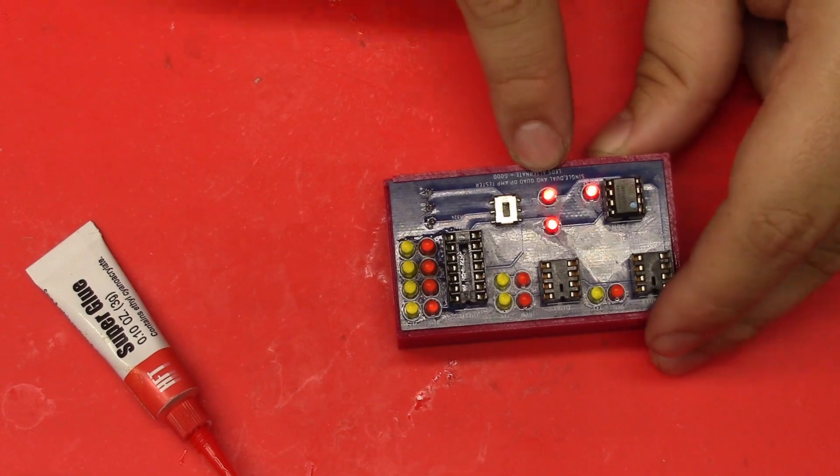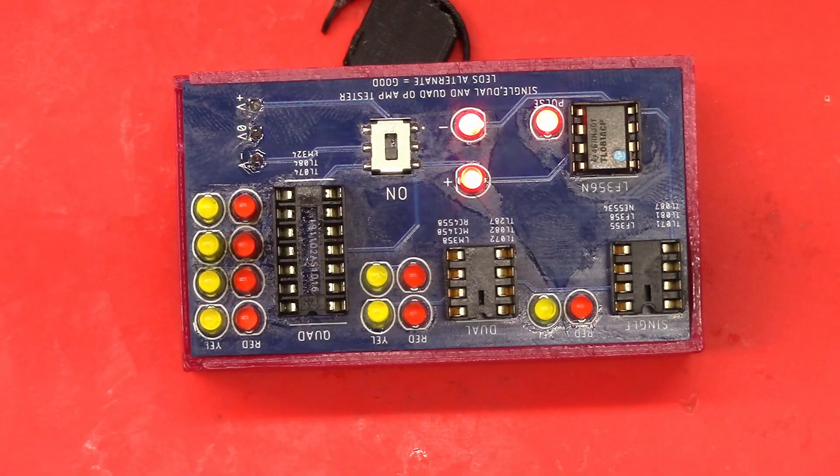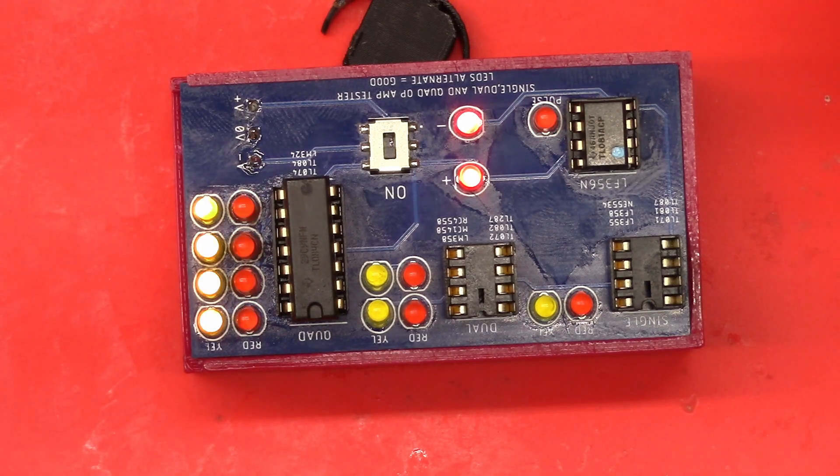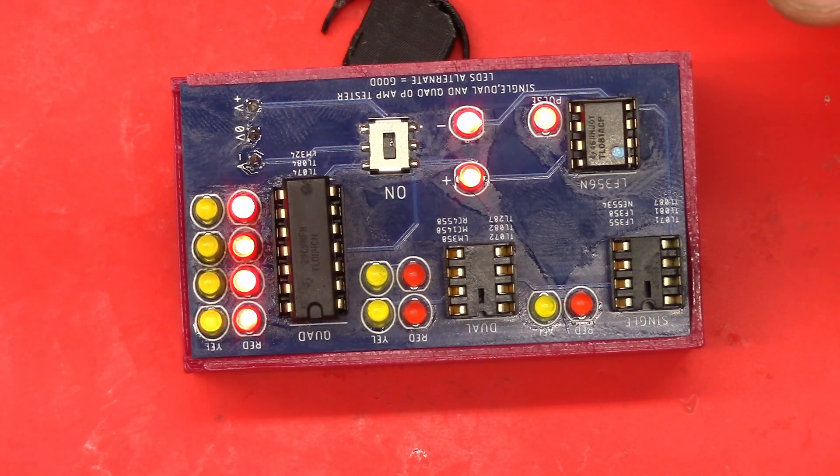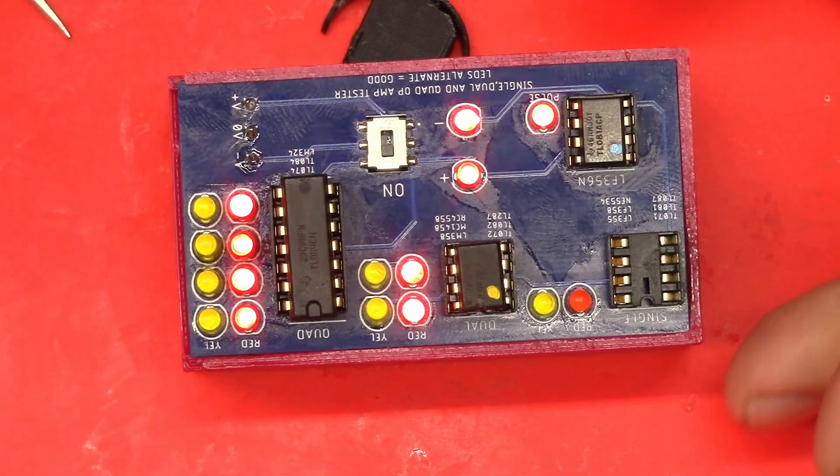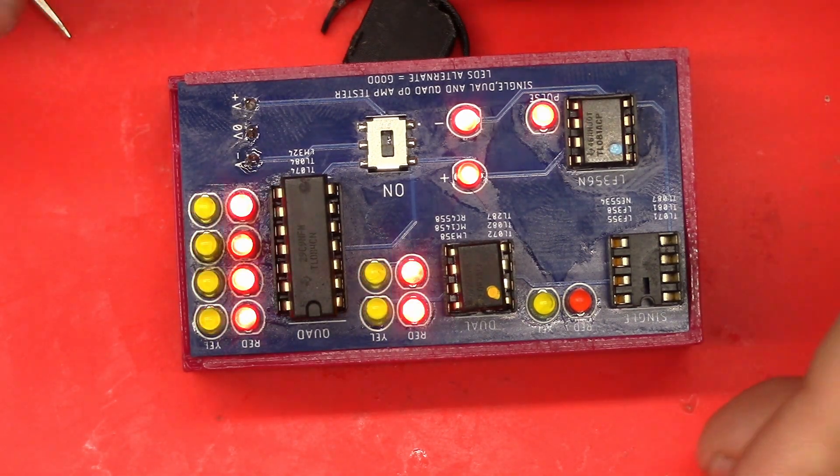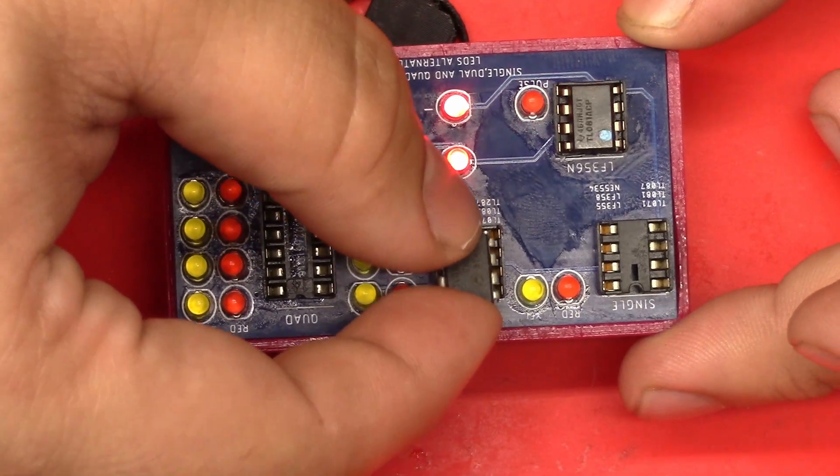So we get our two power LEDs and our oscillation LED, so let's go ahead and test this thing out. Here's a good quad op-amp. As you can see, it's oscillating and pulsing the LEDs, turning them on and off. Here's a good dual op-amp and as you can see it's working as well. I don't have a single op-amp on hand, so you have to forgive me for that. Let's go ahead and put in some bad op-amps and see what happens.